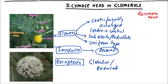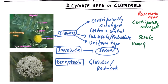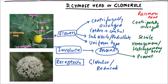If it is compared to a racemose head, the flowers are centripetally arranged. These are sessile, and it may be a homogamous or heterogamous head — that is, either the flowers may be of the same type or of different types. Involucre is present and the receptacle is either broad or elongated.